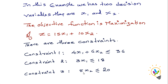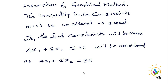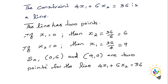In the graphical method we need to make one assumption: the inequality should be removed and treated as equality. So the first constraint 4X1 plus 6X2 less than or equal to 36 will be considered as the line 4X1 plus 6X2 equals 36. When we make it equality, it becomes a line, and every line has two points.